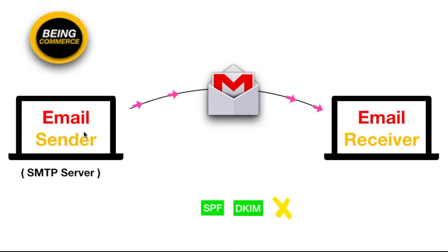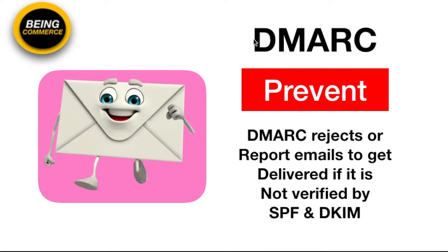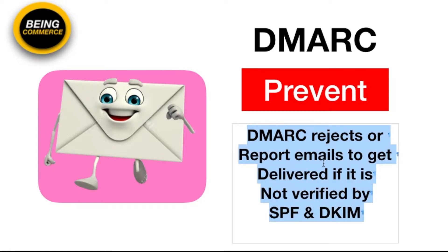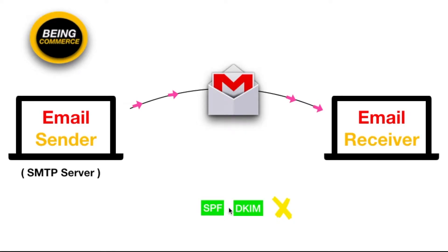Suppose the email sender has sent one email, but for some reason your SPF and DKIM have not verified this email message. That can be a very dangerous thing for email receivers. DMARC comes into action and immediately rejects or reports emails that are not verified by SPF and DKIM, stopping them before they reach the email receiver.